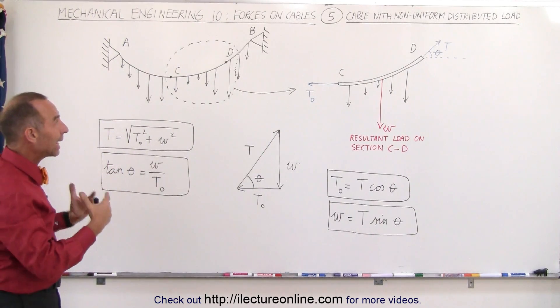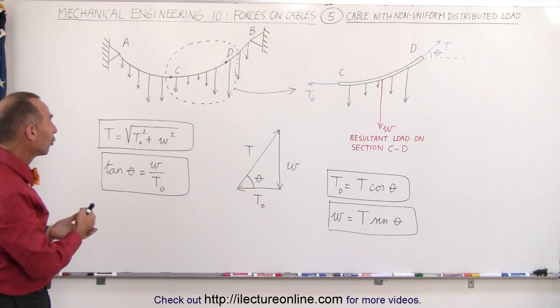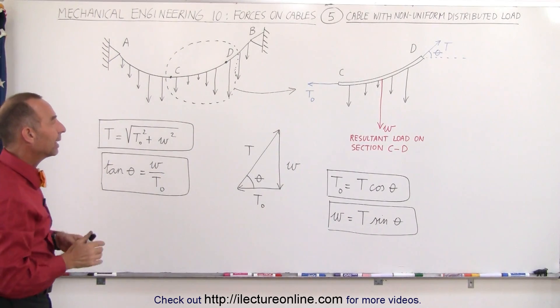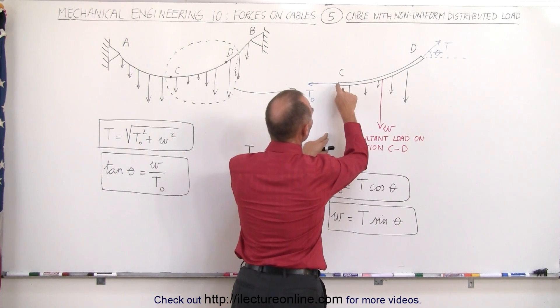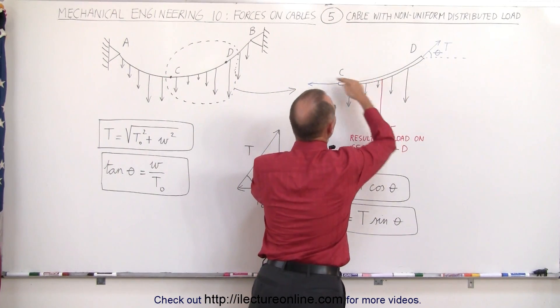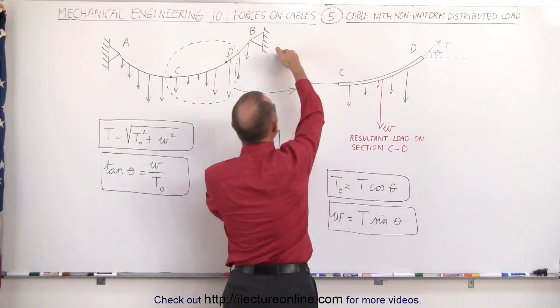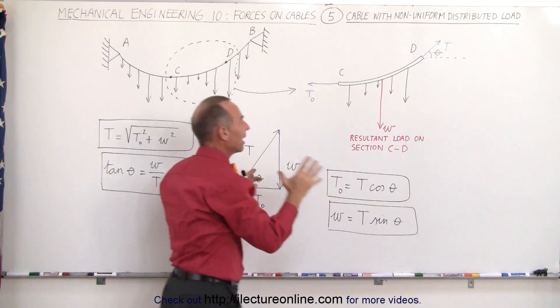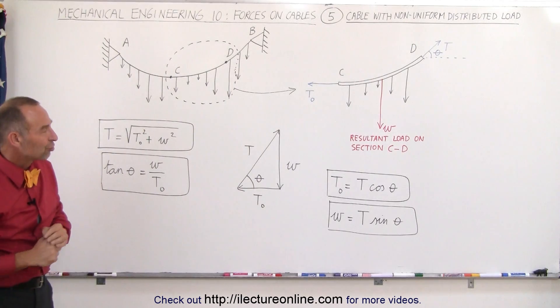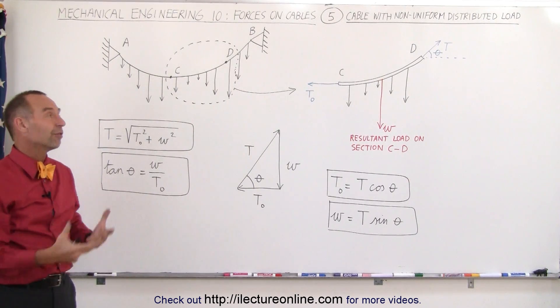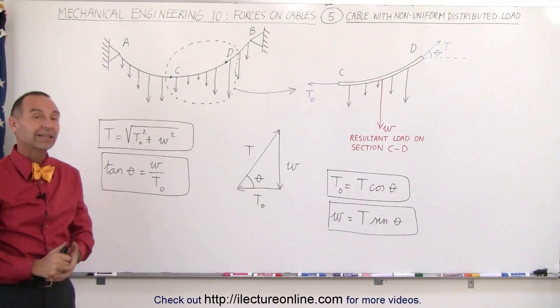But that's how you want to look at a cable that has a non-uniform distributed load. Again, simply take out a section of cable, make sure that one end of the cable is at the lowest point, and then D can be at any other point along, can be on the left side, on the right side of C, and then you analyze the cable as follows, using the simple method of a triangle made up of the three forces involved on that section of cable. And that's how it's done.